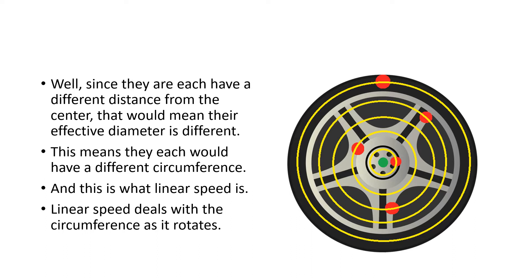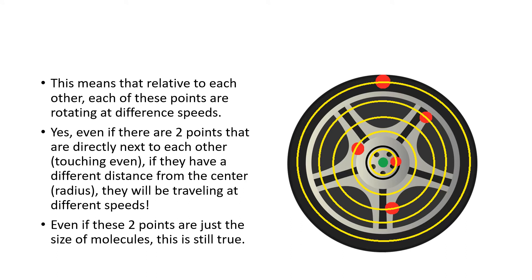Linear speed deals with the circumference as it rotates. This means that relative to each other, each of these points are rotating at different speeds.